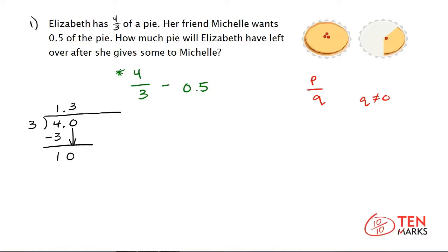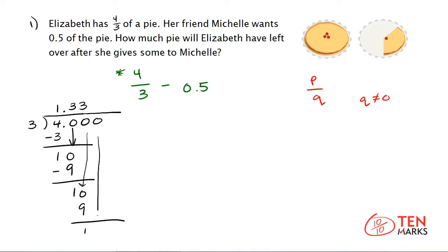3 goes in 3 times. 3 times 3 is 9. Do the subtraction: 10 minus 9 is 1. Since 3 does not go into 1, include another 0 and bring it down. 3 goes into 10 three times again, 3 times 3 is 9, and 10 minus 9 is 1. You can keep doing this — I notice a pattern forming. Every time I'm left with a remainder of 1 and have to include another 0, so the digits after the decimal point are going to repeat.